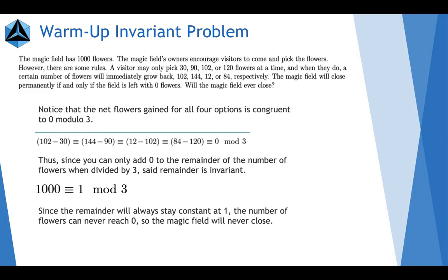And since 1000 is congruent to 1 modulo 3, the remainder of flowers when divided by 3 will always be 1. So the number of flowers will never be able to reach 0. The magic field will never close.